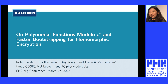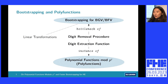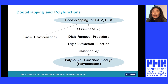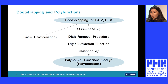Robin is also here today. Let's start by linking the two parts: polyfunctions and bootstrapping. Bootstrapping is an operation in homomorphic encryption that reduces noise. For schemes such as BGV and BFV, it has two components: linear transformations and the digit removal procedure. Since the latter is 3 to 50 times more expensive than the former, the digit removal procedure is a true bottleneck in bootstrapping. The main building block of the digit removal procedure is called the digit extraction function, which are instances of polynomial functions modulo p to the power of e — in this talk, we call them polyfunctions in short.